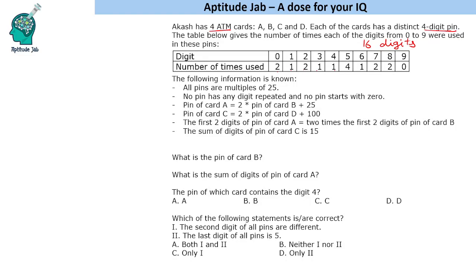The biggest condition here is that all PINs are multiples of 25, which reduces our cases significantly. Multiples of 25 end in 00, 25, 50, or 75. Since no digit is repeated, 00 is not possible. So the last two digits of these PINs must be 25, 50, or 75.